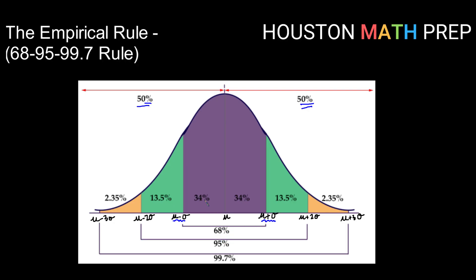I also do want to point out that because this is a symmetrical distribution, that means that 34% will be between one standard deviation below the mean and the mean, and 34% will be one standard deviation from the mean and one standard deviation above.